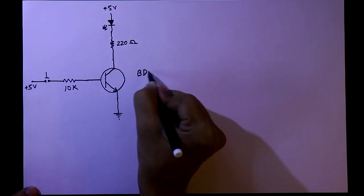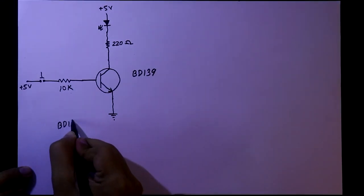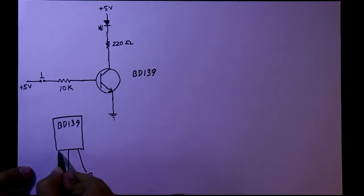I will make this circuit with BD139 transistor. Here's the front side of the transistor. The middle pin is collector, the rightmost pin is base, and the leftmost pin is emitter.